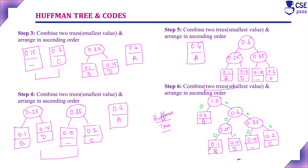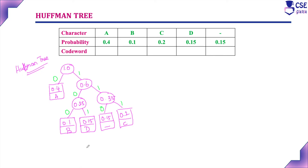Now find the codeword for each symbol by tracing from the root to the leaf where the symbol is located. The codeword for A is 0; for B it is 100; for C it is 111; for D it is 101; and for underscore it is 110.